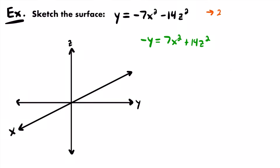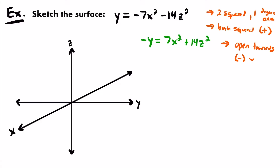That negative sign just tells us more about the direction of this elliptic paraboloid. So let's write these things down: we have two squared variables but one degree-1 variable, and both squared are positive. The degree-1 variable tells you your direction axis. In this case, y is to the first power, so this paraboloid will be directed along the y-axis. Because it is negative y, we will be directed towards the negative y-axis — the paraboloid will open up towards the negative side of the y-axis.